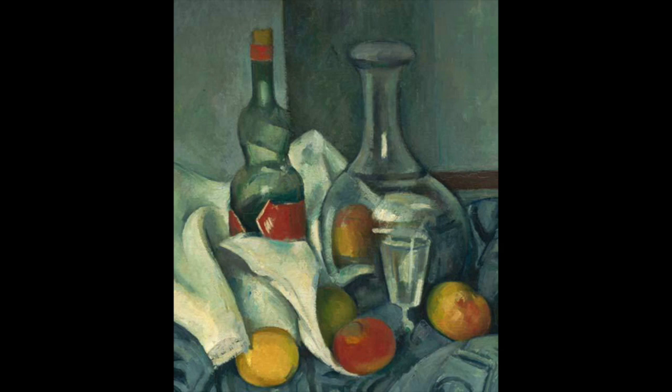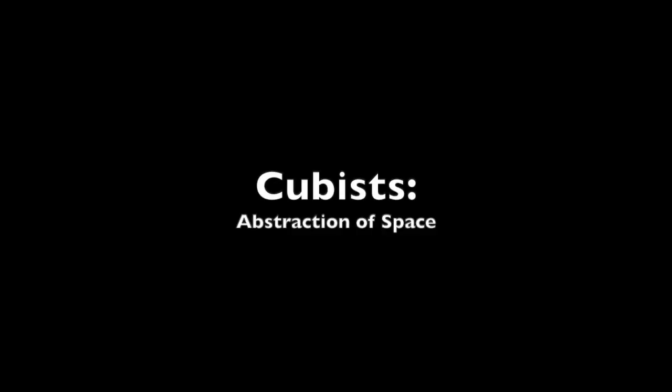Cézanne would lay pure color on top of pure color rather than blend it. He eventually rejected strict classical perspective, allowing perspective to be based on the relationships between objects rather than one single point altogether. This led to the impression that he was examining an object from multiple sides at once. Through his investigations, Cézanne was able to use abstraction of shape, color, texture, and space to produce some really groundbreaking work.